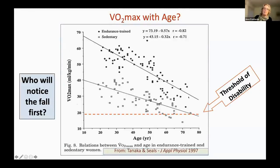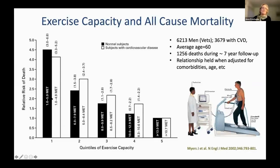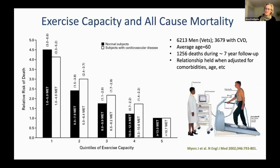It's not just function — it's also all-cause mortality. Here's one of many studies showing the relationship between exercise capacity and death from any cause. This was done at the Palo Alto VA with over 6,000 veterans whose capacity was measured on a treadmill, then divided into quintiles of exercise capacity. The top group is the fittest, the bottom the least fit, covering both normal subjects and those with cardiovascular disease. Compared to the most fit group, those in the least fit group were four to four-and-a-half times more likely to die from any cause over a seven-year follow-up — a well-established relationship between fitness and all-cause mortality.